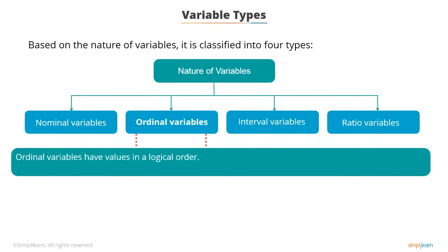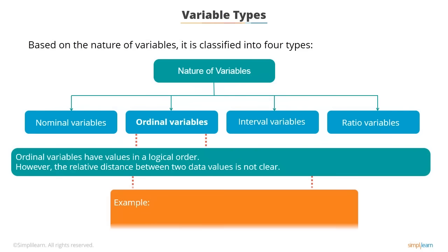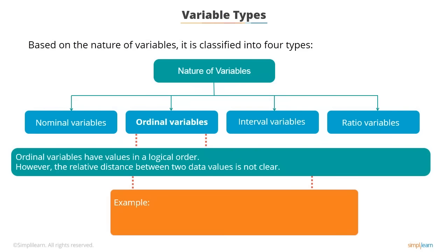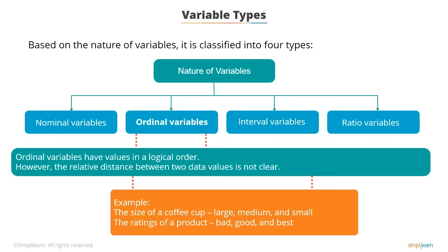Ordinal variables have values ordered logically; however, the relative distance between two data values is not clear. Examples of ordinal variables include the size of a coffee cup — large, medium, and small — and ratings of a product such as bad, good, and best.